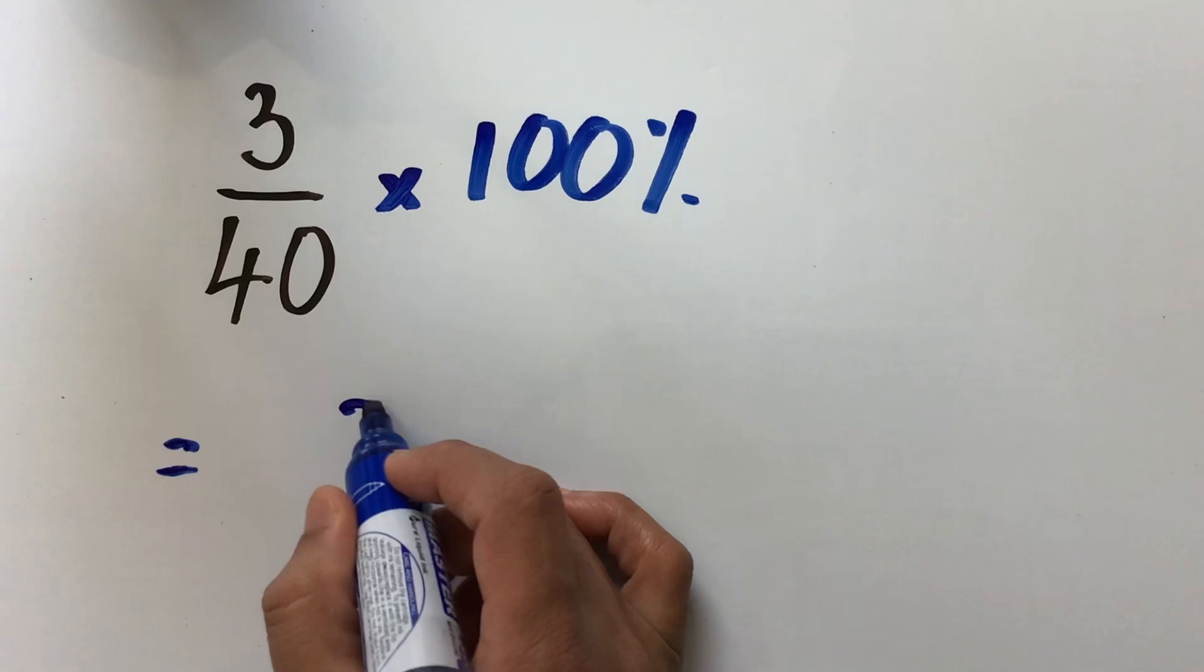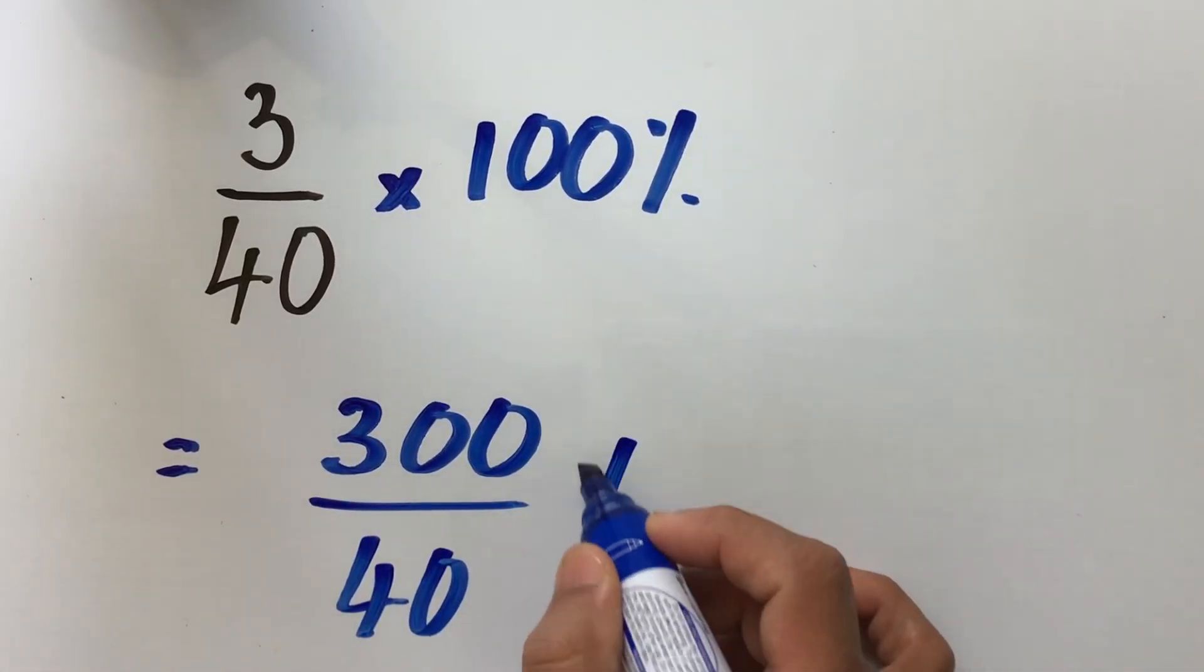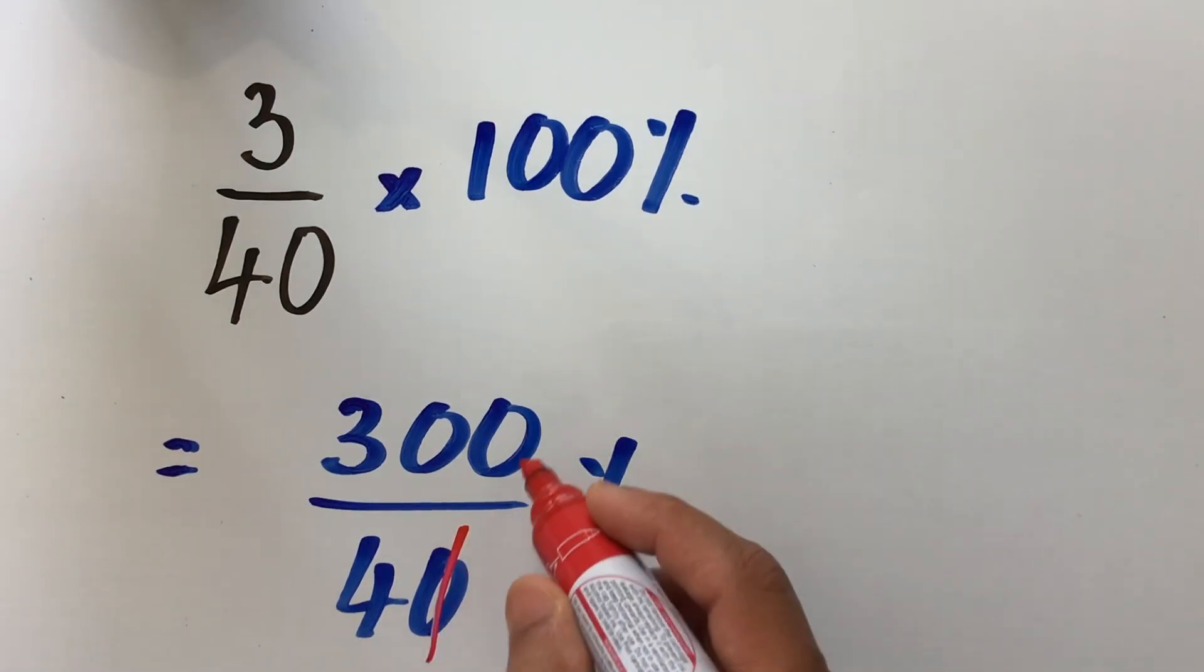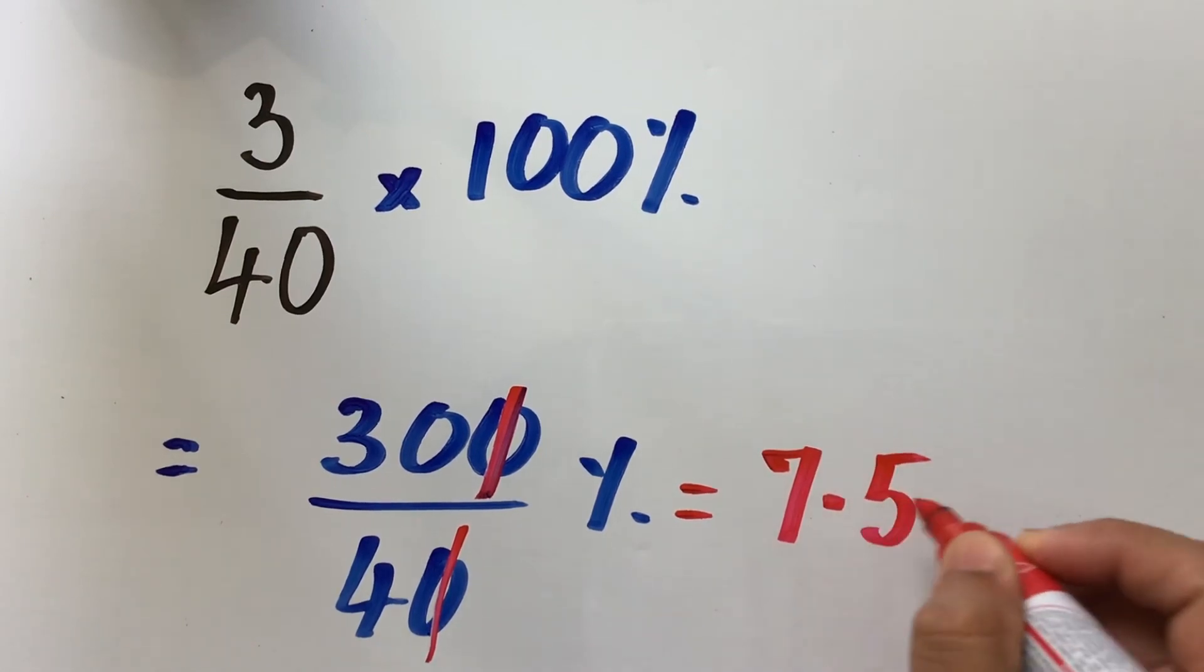So, the first step would be, multiply the numerators, which gives you 300, keep the denominator as same, and now, if you cancel the zeros, now, we divide 30 by 4, which gives us 7.5 percent.